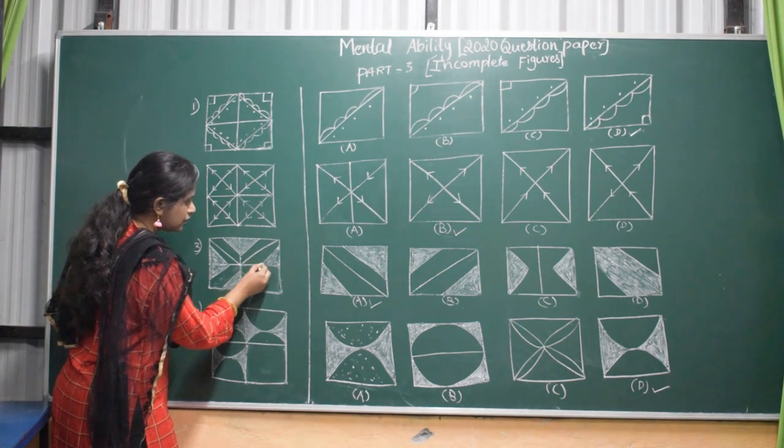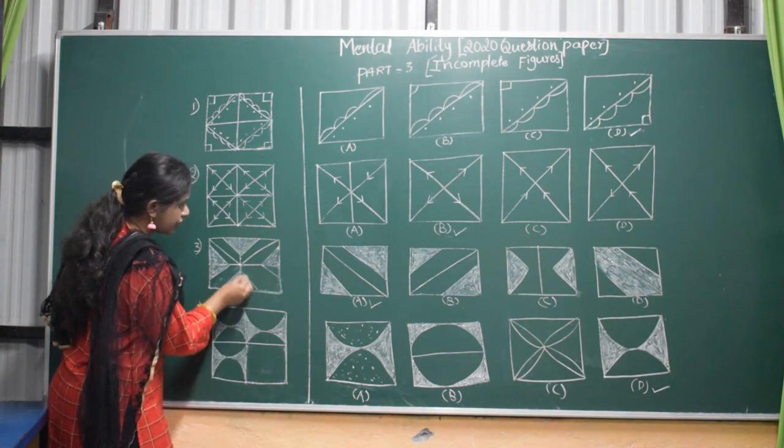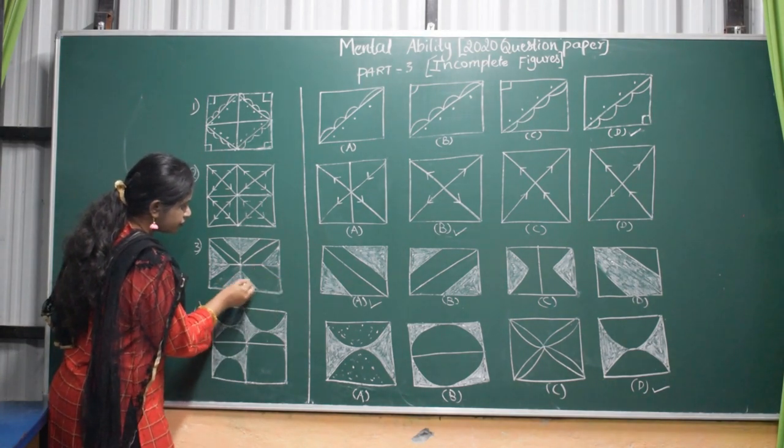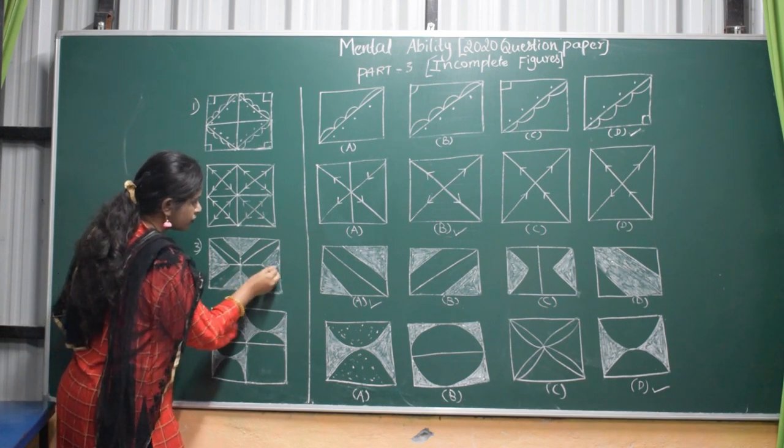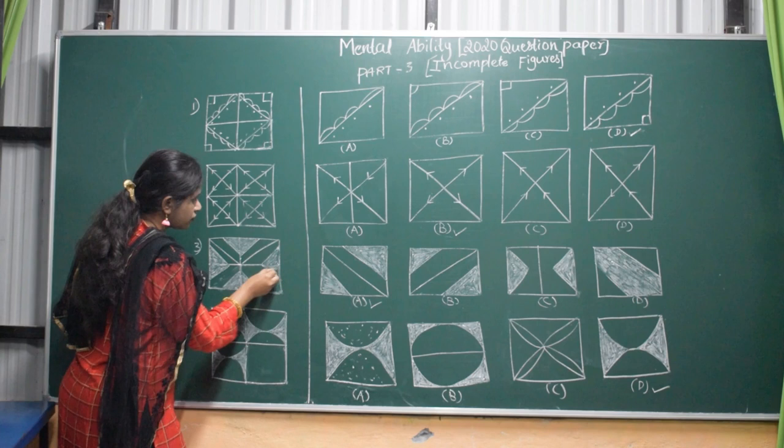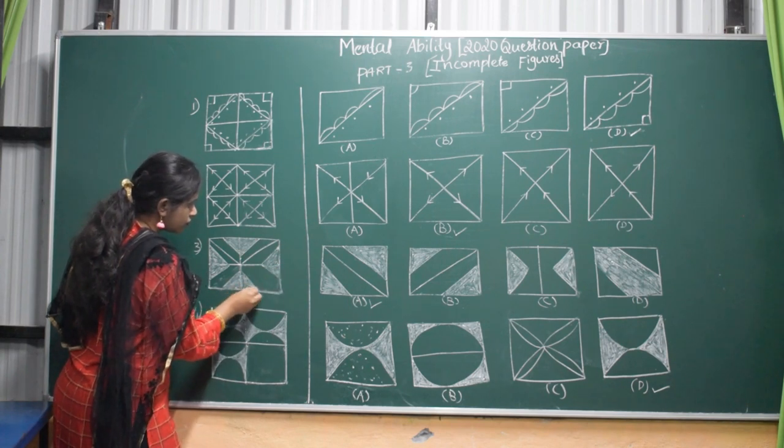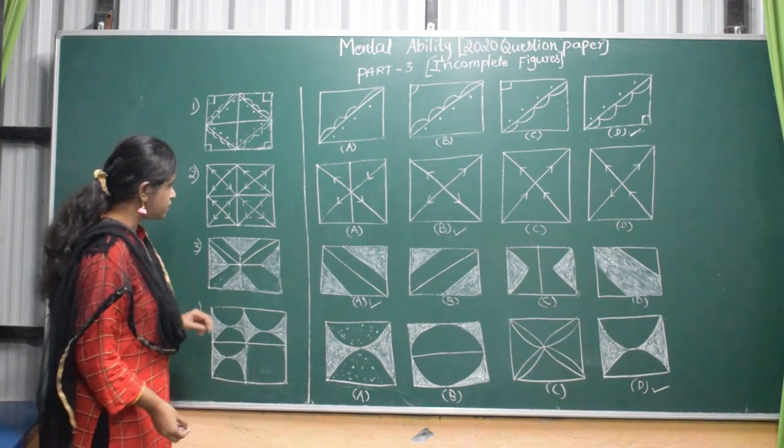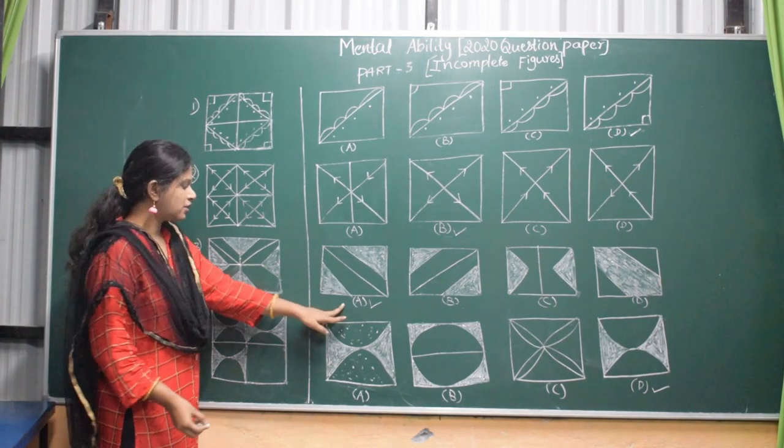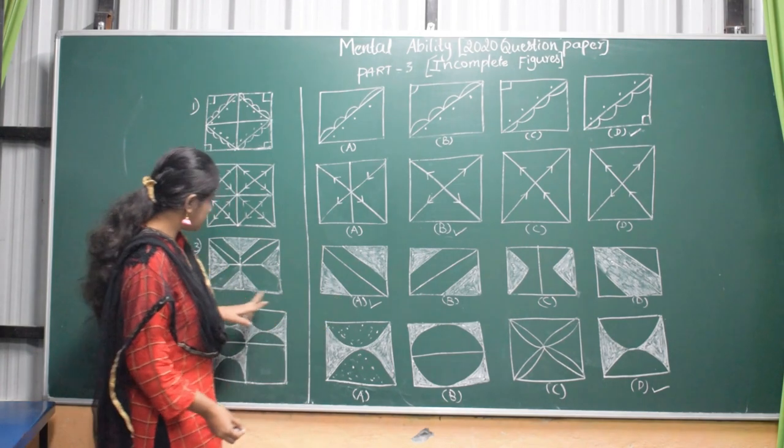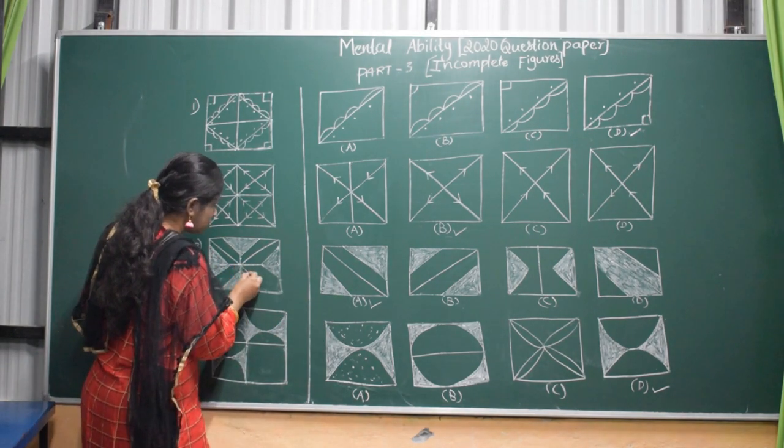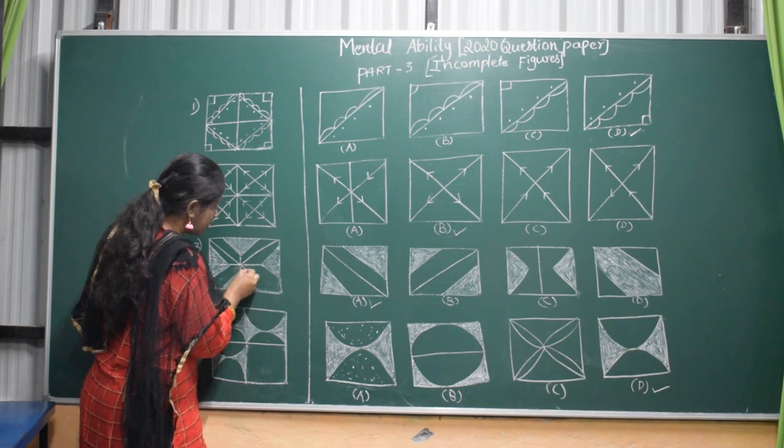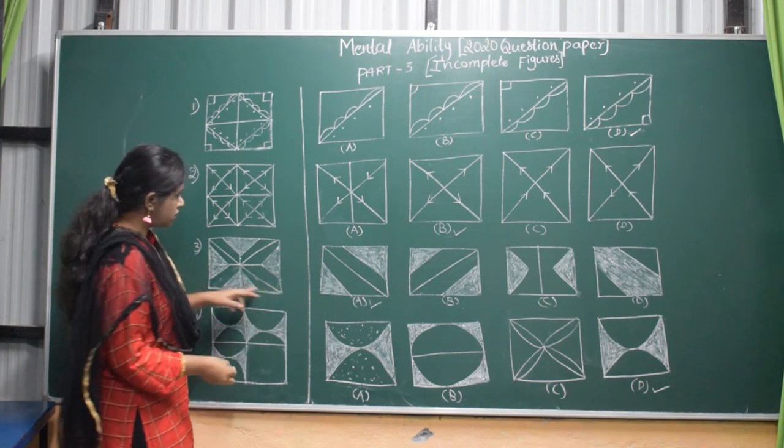Draw a triangle here and here. Shade it. Now you want to observe which figure is similar to this. So figure A is looking same. And here also draw one line.